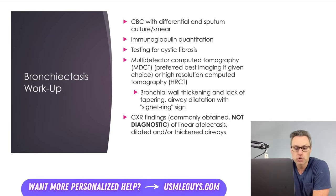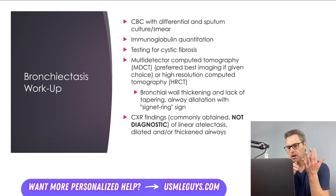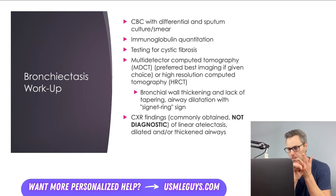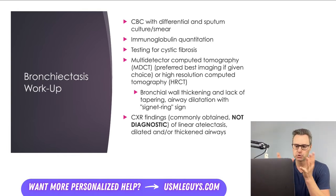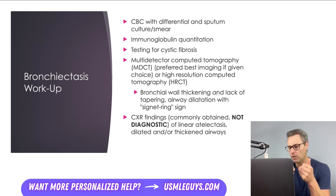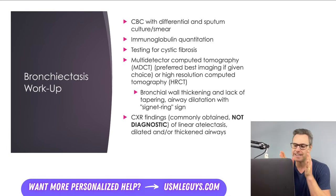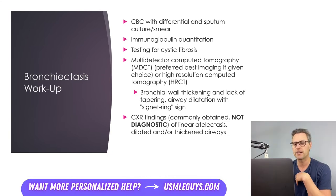Treatment for bronchiectasis involves airway clearance techniques, pulmonary rehabilitation, and treating any underlying condition if possible. When a patient has an exacerbation — manifesting as worsening clinical symptoms over a 48-hour period — they should be treated with antibiotics tailored based on prior cultures and antibiotic sensitivities.